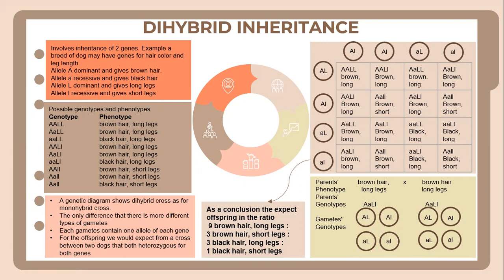For the offspring, we would expect a cross between two dogs that are both heterozygous for both genes. You have to plot a genetic diagram. The parent phenotype for the breed of dog is brown hair with long legs. The parent genotype for brown hair and long legs is capital A, small a, capital L, small l. You then proceed to plot the gametes genotype, drawn as circles, with content the same as the parent genotype.